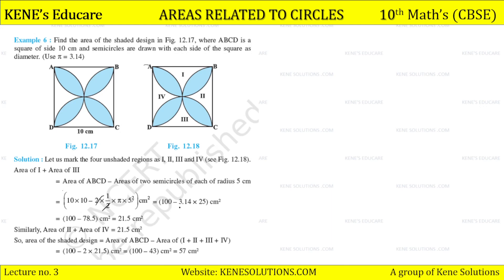So here, 10 × 10 - 2 × 1/2 × π × 5². We get 100 - 3.14 × 25 = 21.5 cm². Similarly, area of region 2 + area of region 4 = 21.5 cm². So the area of shaded region = 100 - 2 × 21.5 = 57 cm².